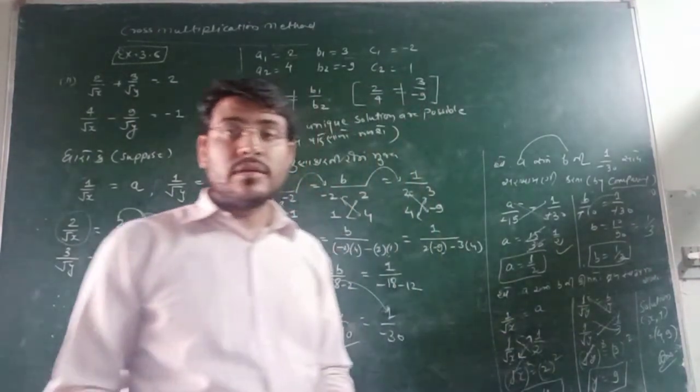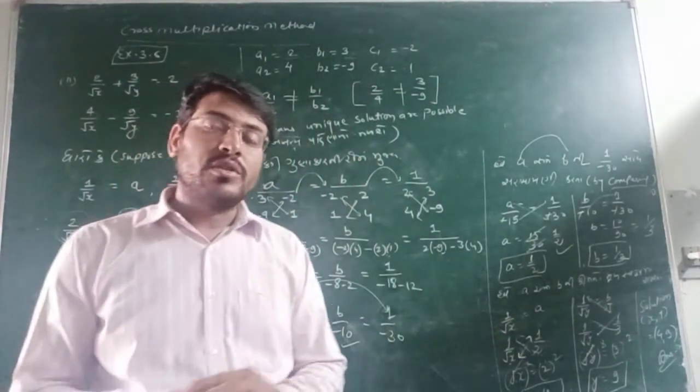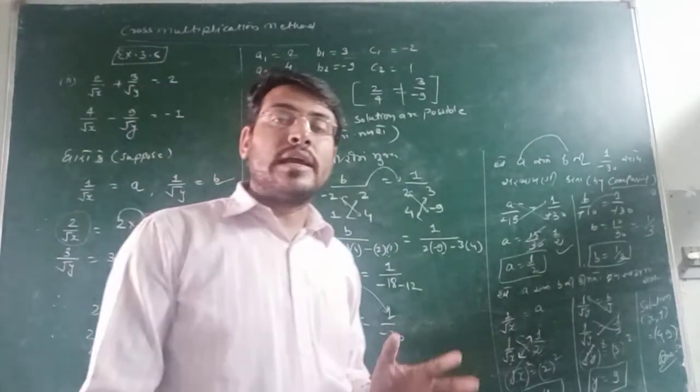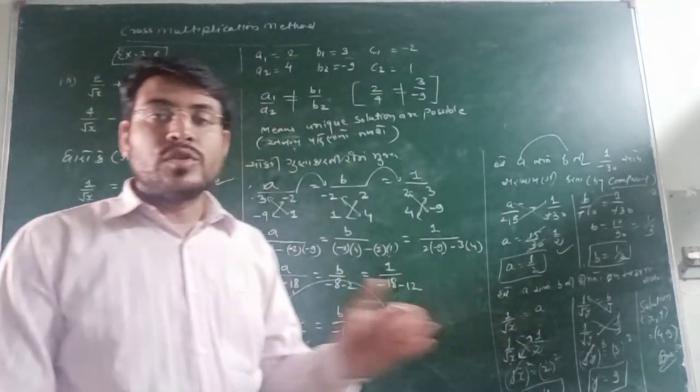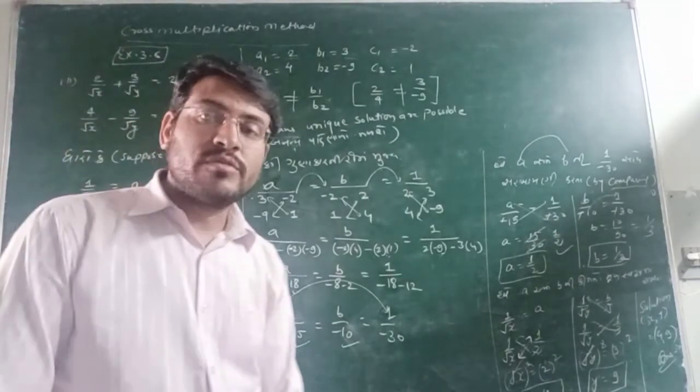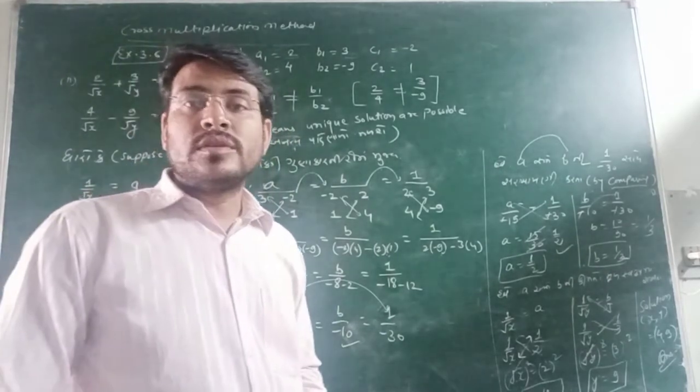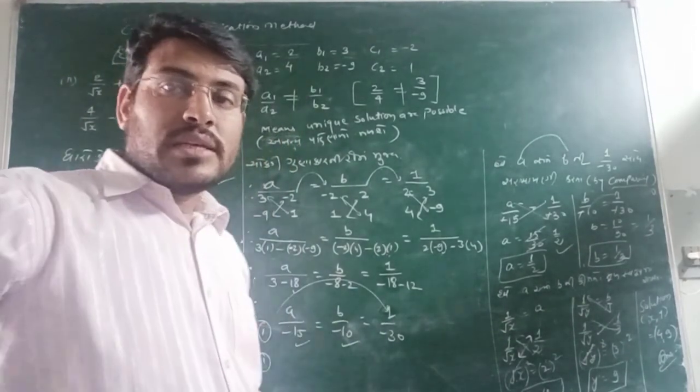So in this way we have found the solution of x and y, 4 and 9 respectively. So this is all about your 3.6 exercise students. In this exercise you will find same kind of questions. Next 2 questions, question number 3 and question number 4, that will be in your homework. So we'll meet in next video very soon. Till then bye-bye, see you, have a nice day.